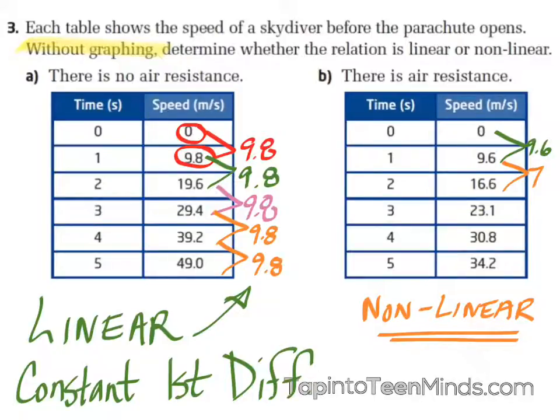One big thing to watch out for: in both tables, what's the same when checking first differences? The time. What about the time is important? If I only checked my speed after one second, then five seconds, then six seconds, then nine seconds — if I'm not checking at a constant interval, then my first differences won't be accurate. They could still be constant but they won't appear to be, so that's something really important to look at.